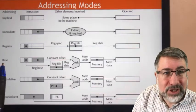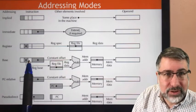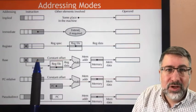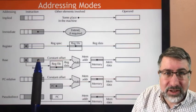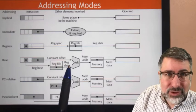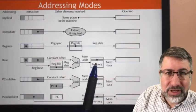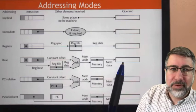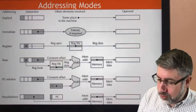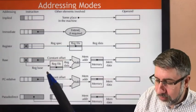In base plus offset addressing, we use a register as the base address. We use the immediate field as a constant offset. We add those two together and we look up the result in the memory, and that is our operand. We use that for loading and storing.